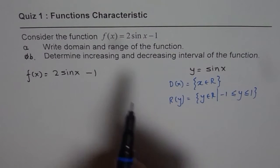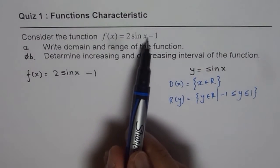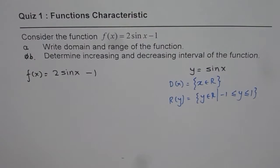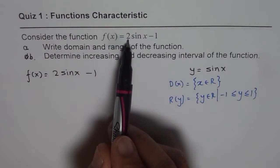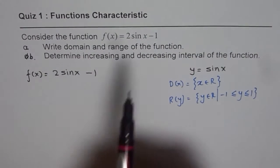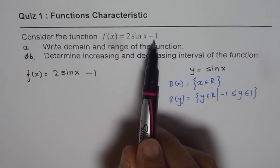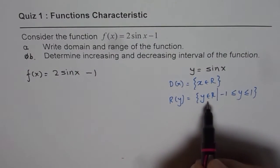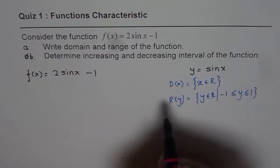Now when we say f(x) = 2·sin(x) − 1, what does that mean? It means the function has been stretched vertically by a factor of 2, and vertically it has been translated 1 unit down. That means the range has changed, but the domain is the same.